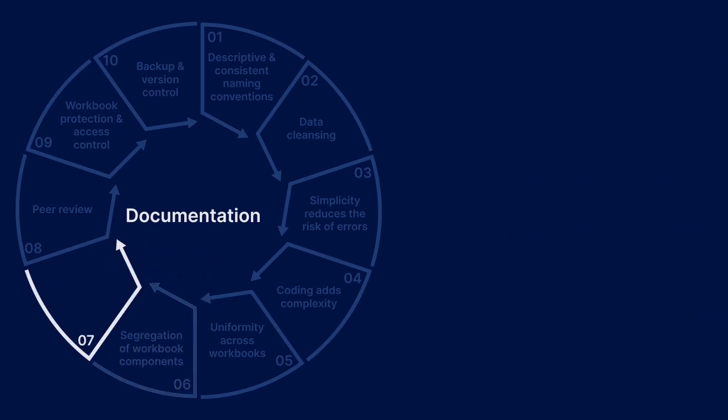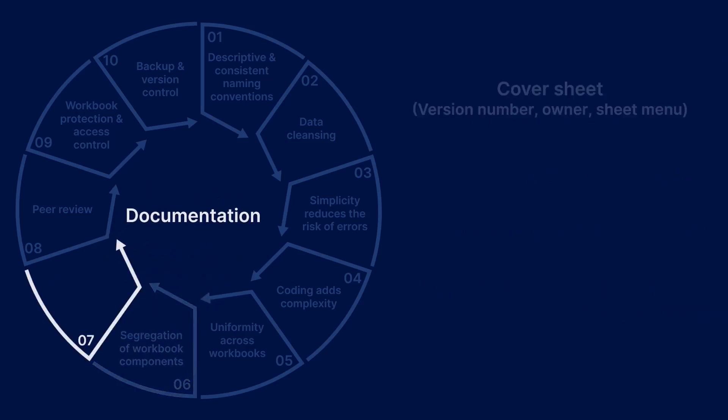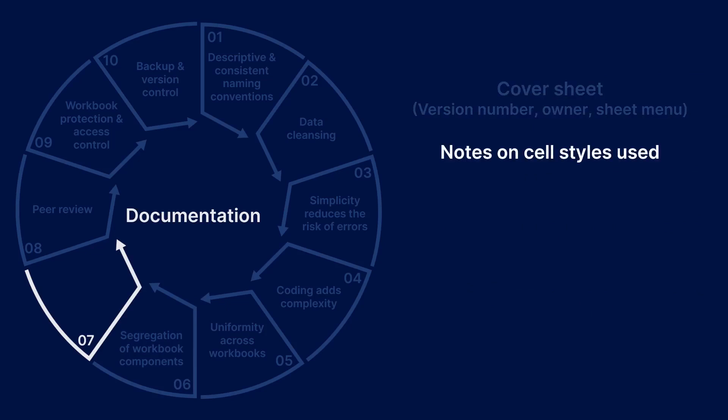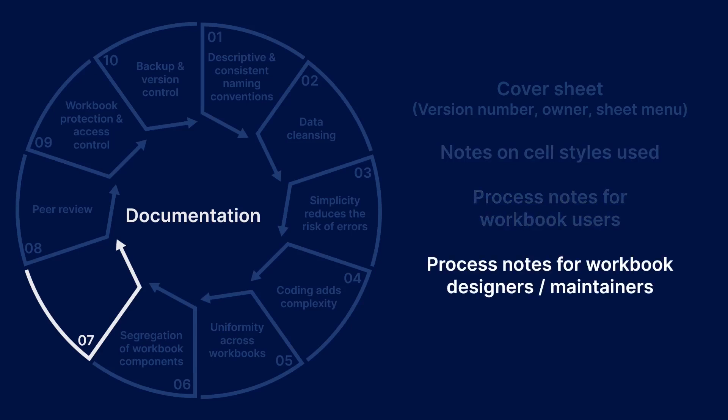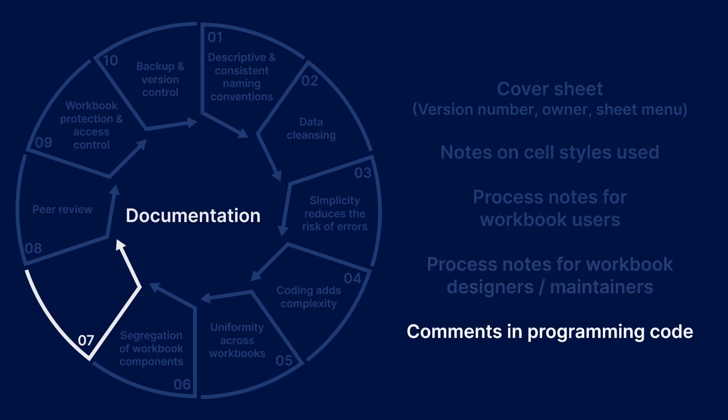Step 7 — documentation for your workbook — would include a cover sheet containing the version number, details of the document owner, and ideally a hyperlinked menu of the other sheets in the workbook. Notes on different cell styles used and what they indicate. Notes for users on how to complete the workbook, and for designers on how to maintain and update the model, and fully commented programming code.